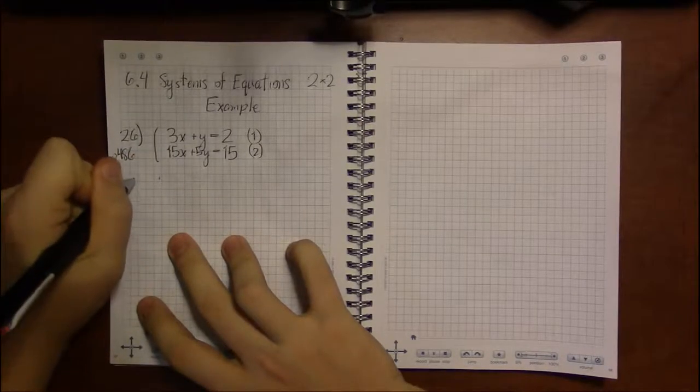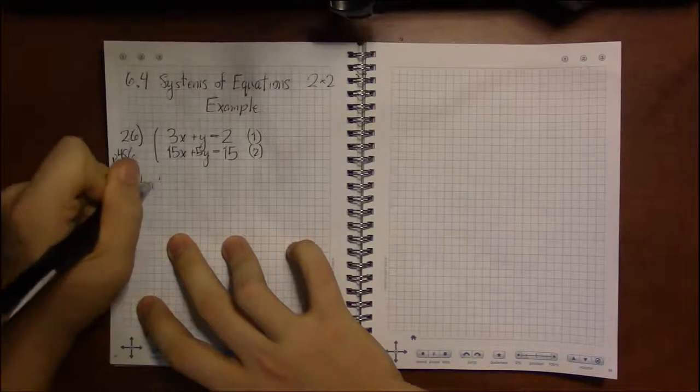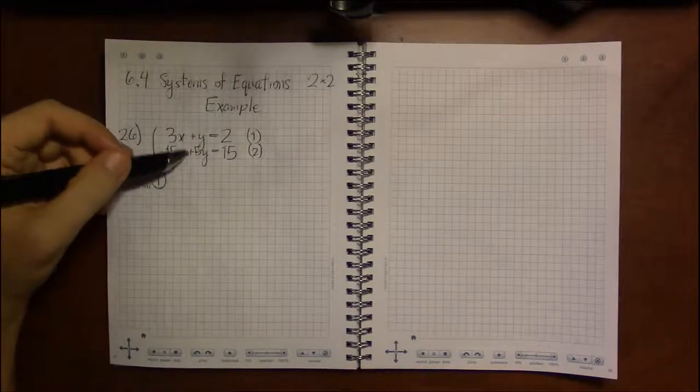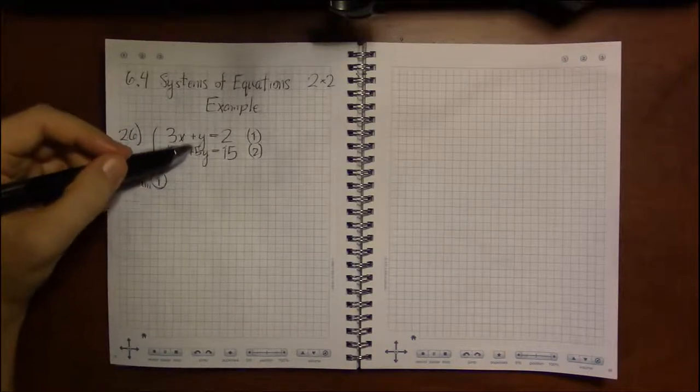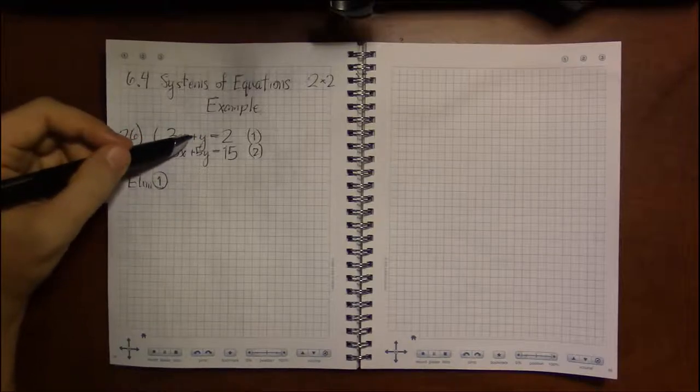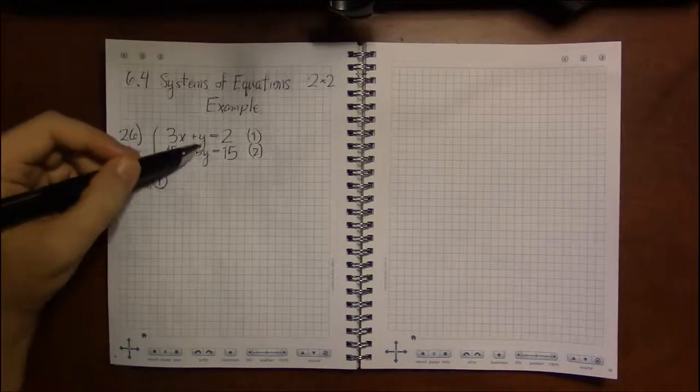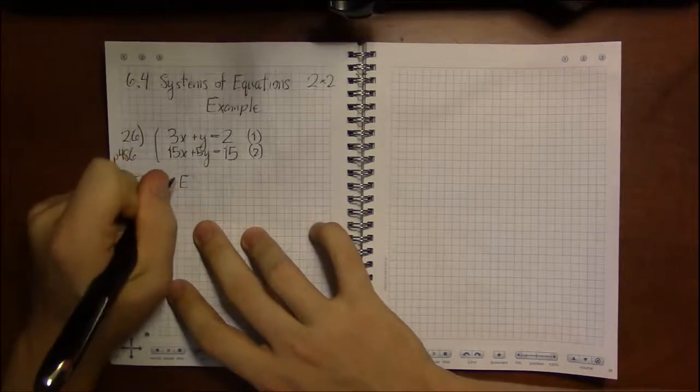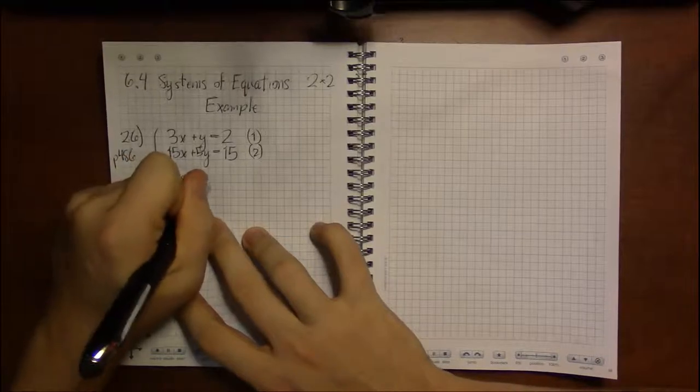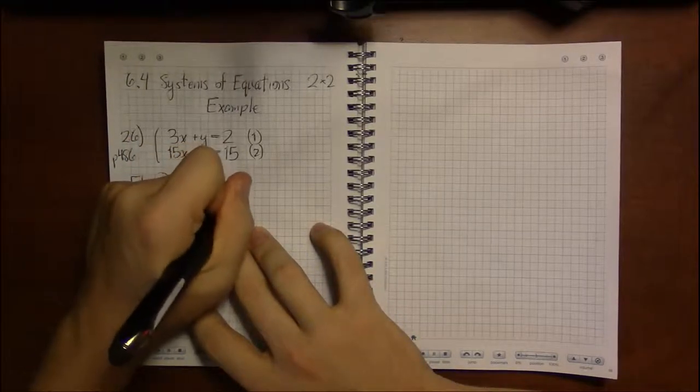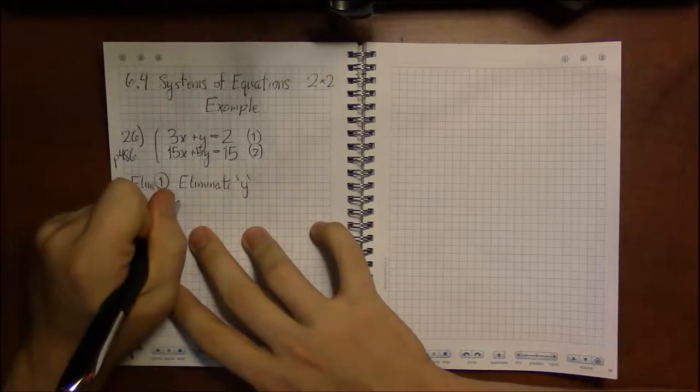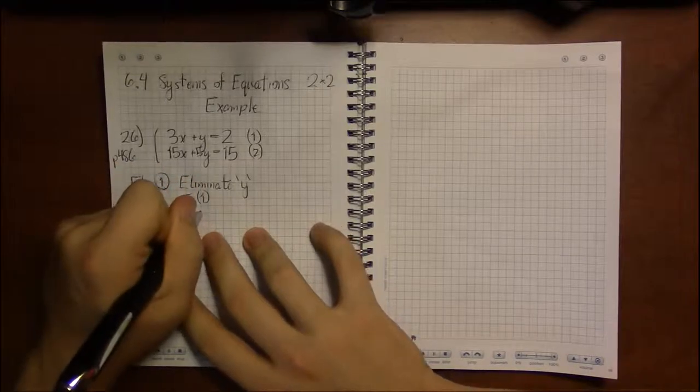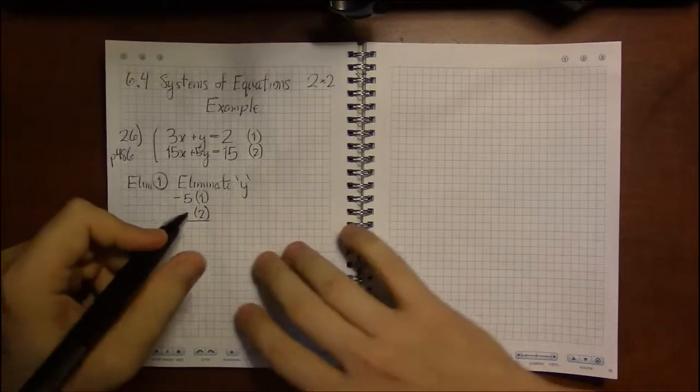So I'm going to choose to do elimination with this and I think the easiest thing to do is to eliminate y. All I have to do is multiply this y by minus 5 then when I add that result to a plus 5y they'll end up canceling. So let's eliminate y. We'll do that by multiplying equation 1 by minus 5 and adding it to equation 2.